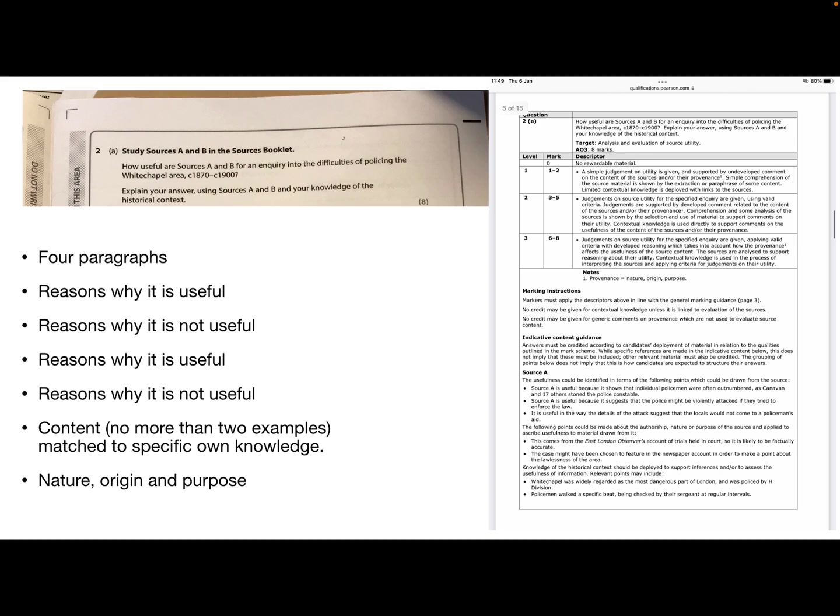So if we look at the mark scheme, one and two marks are available for a simple judgment on utility. Utility means how useful and are supported by undeveloped comments. So you might just identify there what type of source it is or the information from the source, or you might just have rewritten the source as well, which obviously isn't a good plan. Three to five marks then, you make judgments. So you say how useful on source utility. So on that, how useful it is for that inquiry.